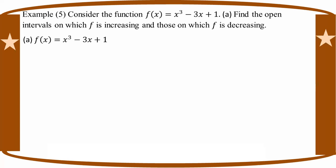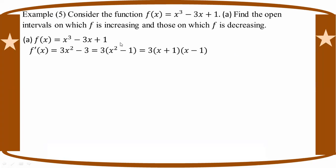So with our test, we find F prime of A. F prime of A equals 3A squared minus 3. We factor this as 3 times A squared minus 1.